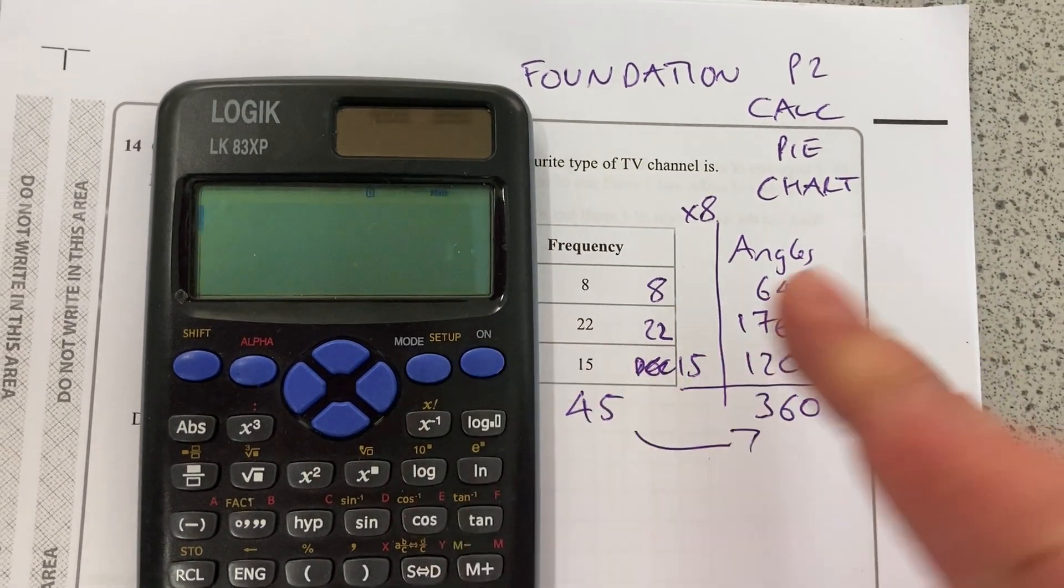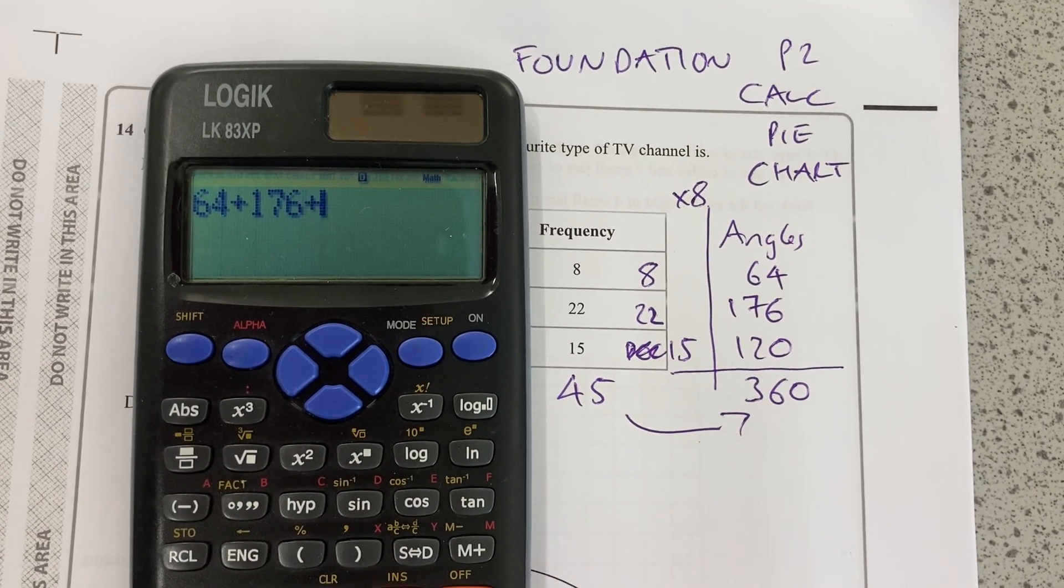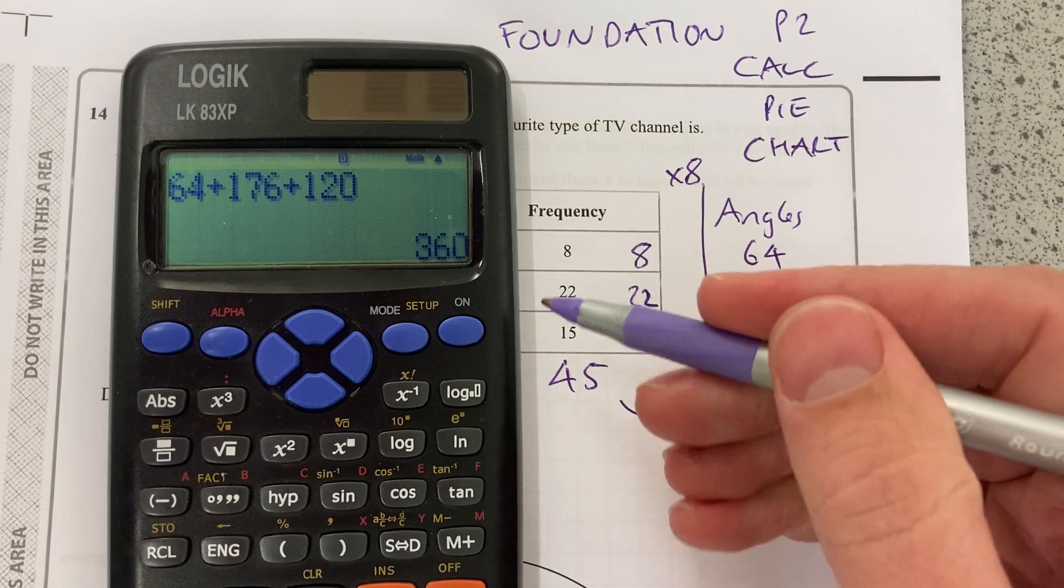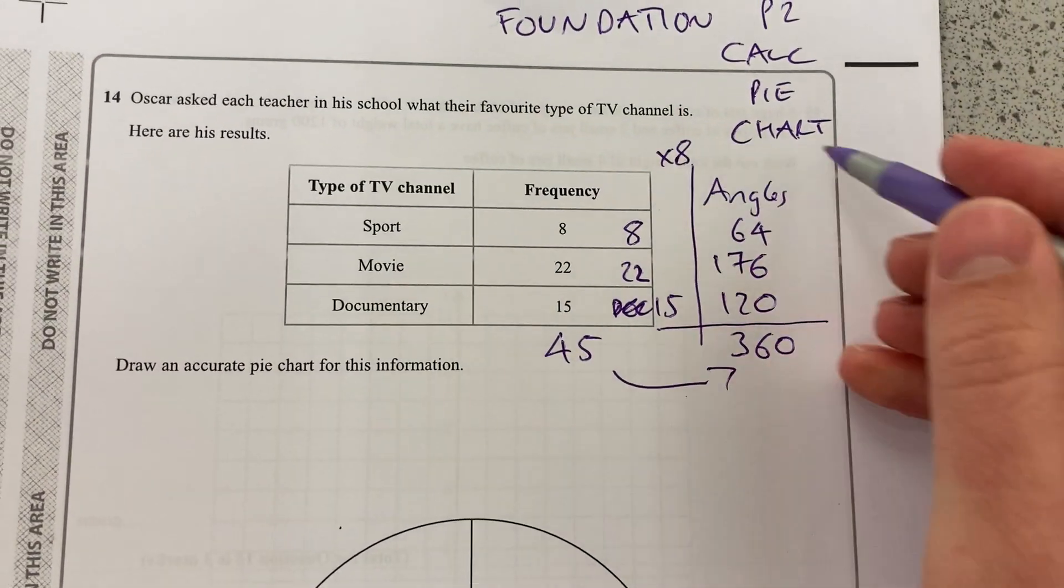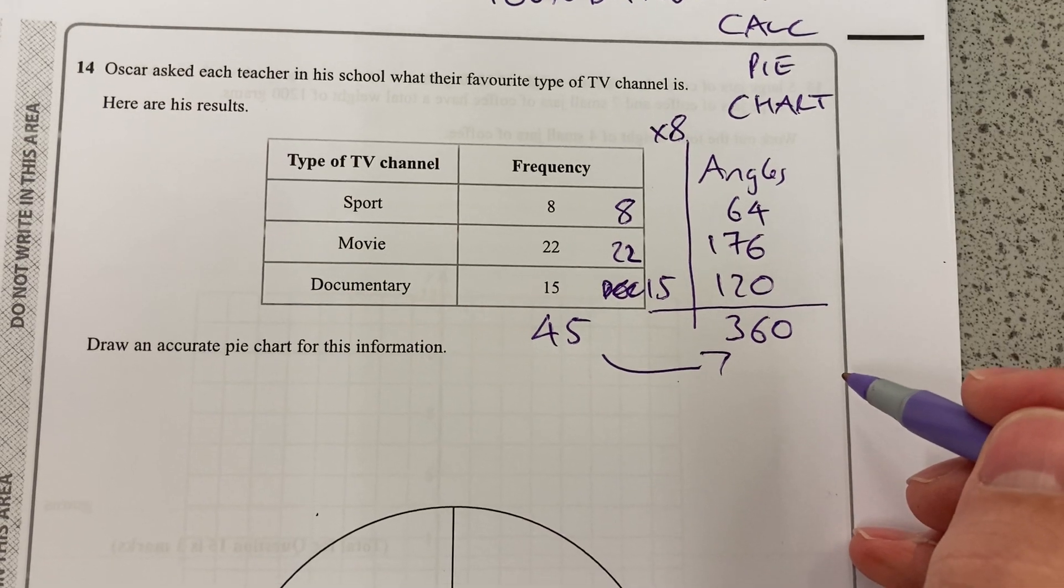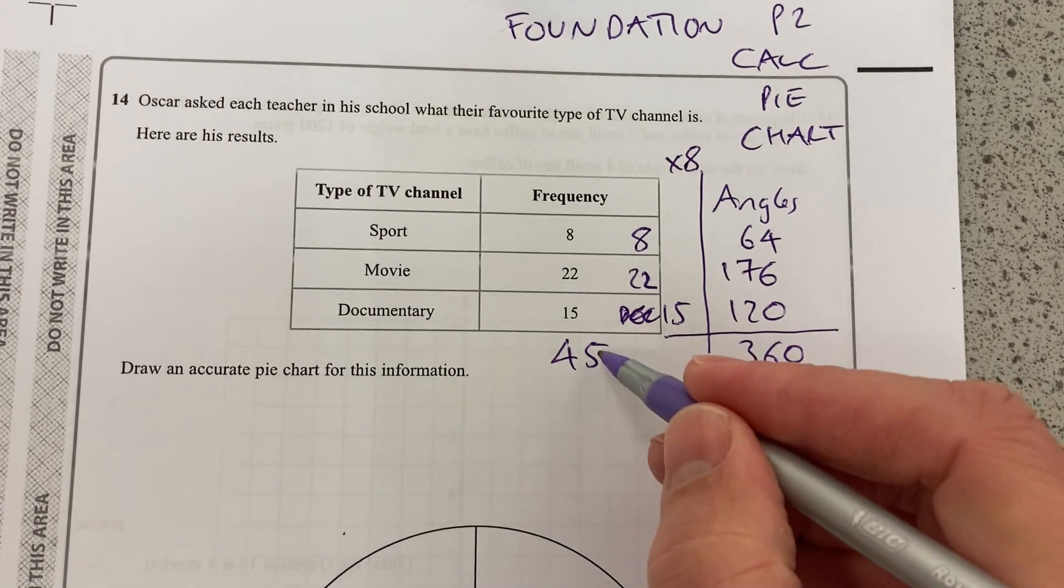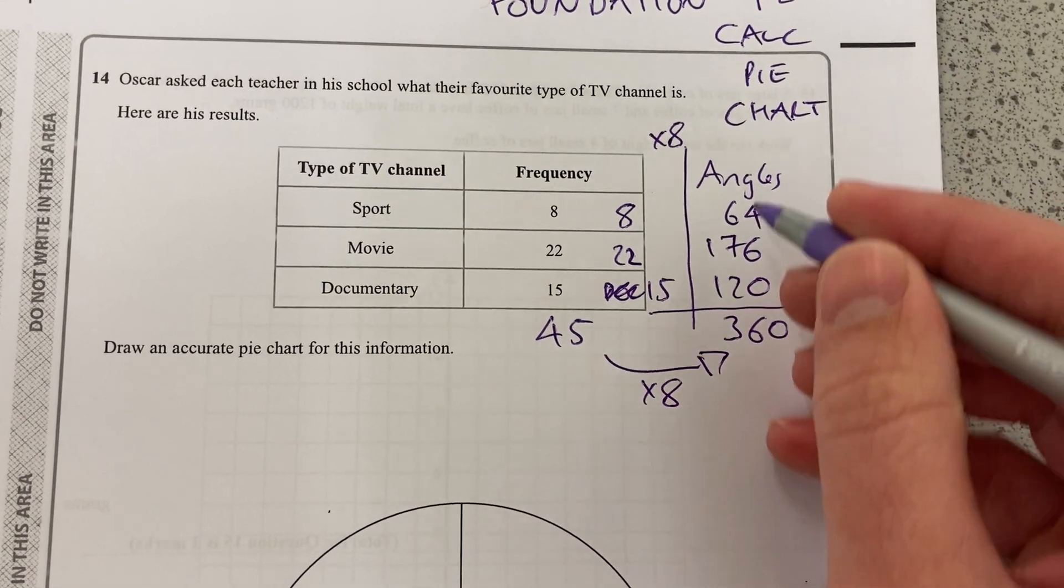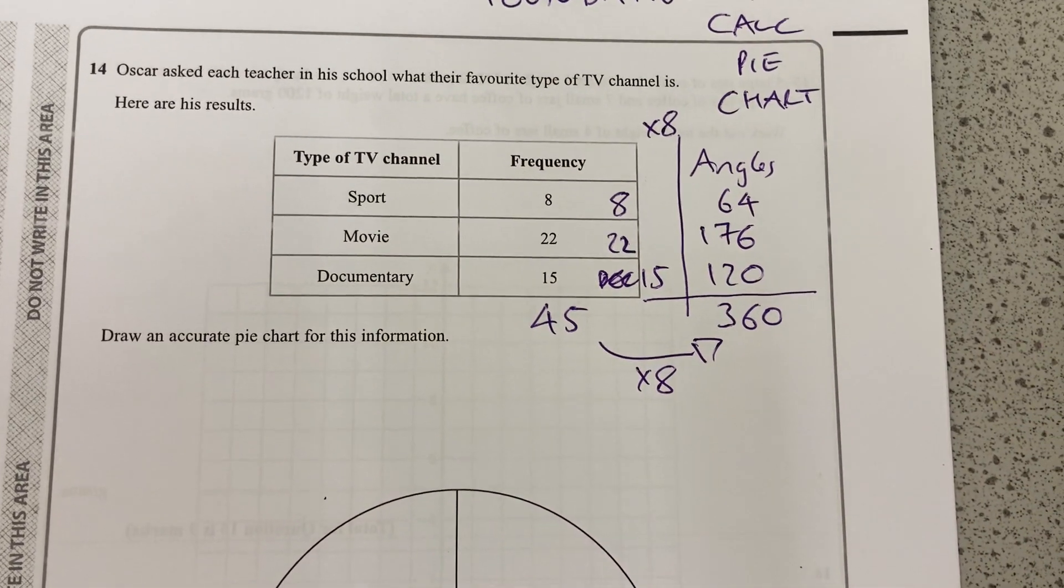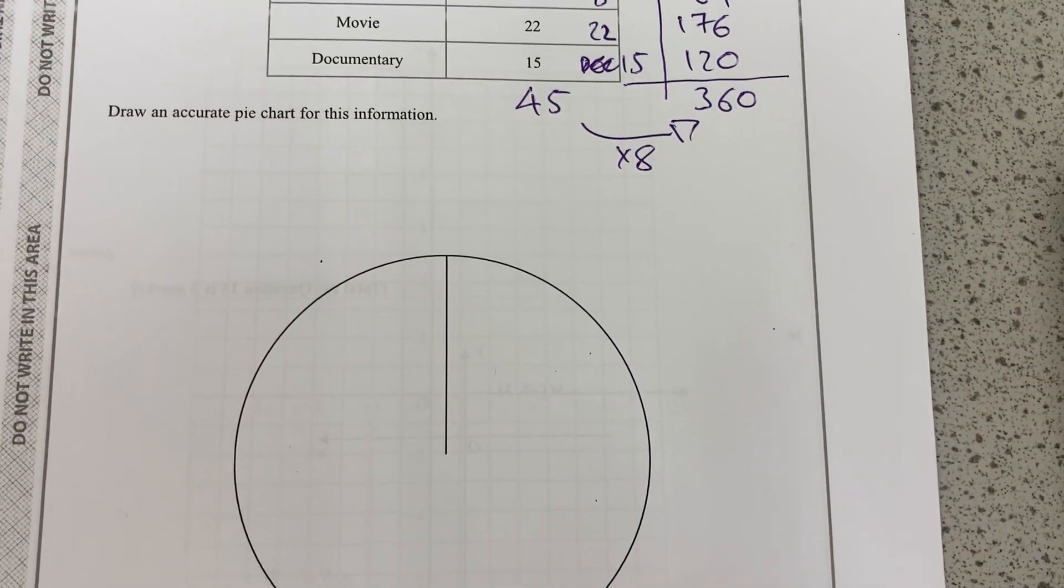Now, I need to make sure that those do add up to 360. 64 plus 176 plus 120, so I will have a complete circle. So that will be sufficient for a mark. I haven't even drawn the pie chart yet, but to show that you understand how I'm going from the data to the angles, multiplying by 8 and getting those numbers which add up to 360, that should be sufficient for a mark. So let's now put them into the pie chart.